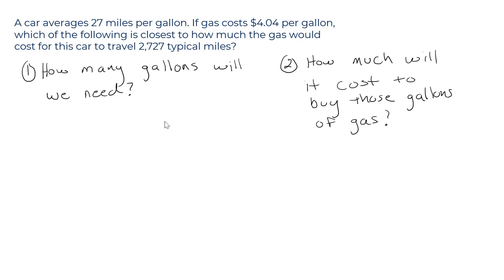Step one, how many gallons will we need to buy? Well, we want to travel 2,727 miles, and we're told that every one gallon of gas will get you 27 miles.